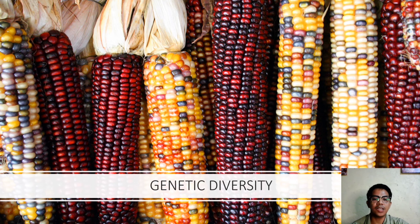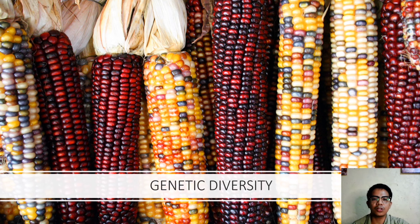An example of genetic diversity is corn, or mais. Originally this crop had five varieties: peeled, sweet, popping, flint, and popcorn. But due to the stress of a changing environment, these corns needed to adapt to survive. Hundreds of hybrid varieties were produced to ensure survival in certain climatic conditions. Now we have purple corn, yellow corn, black corn, and even blue and green corn. This is an example of genetic diversity.